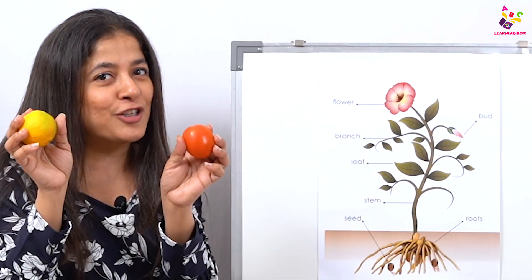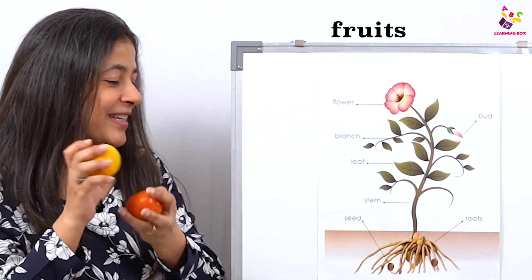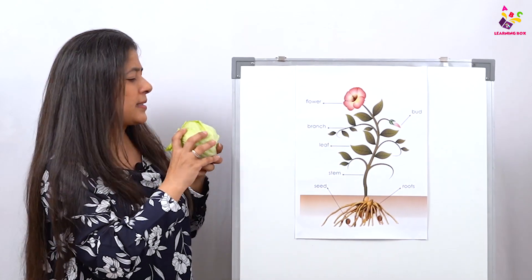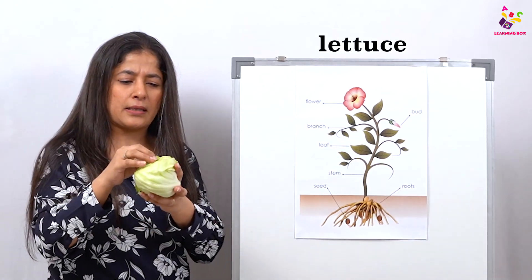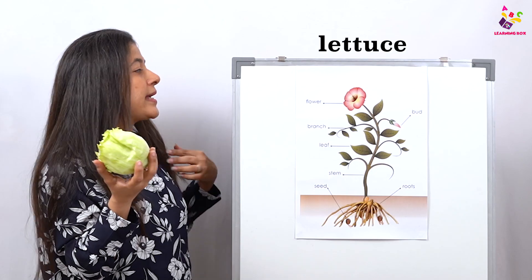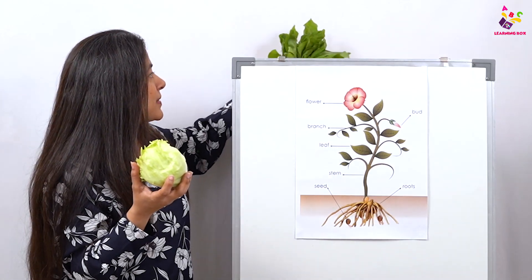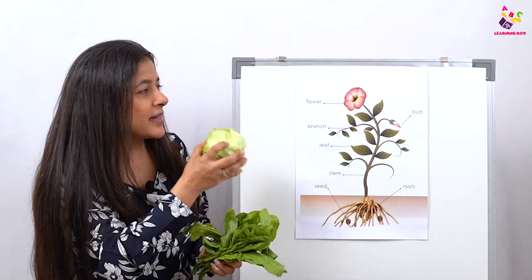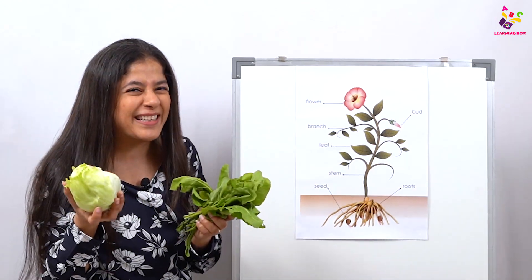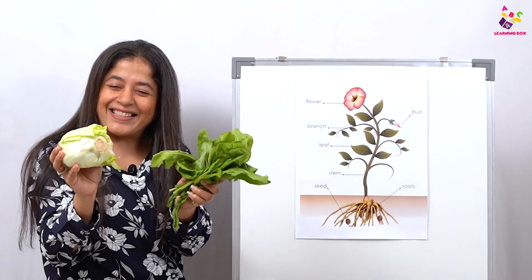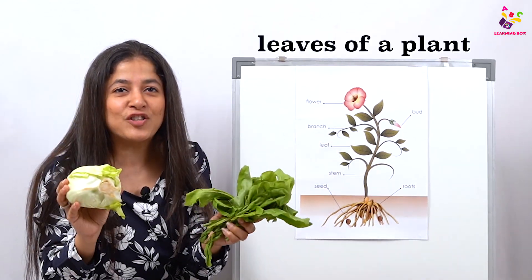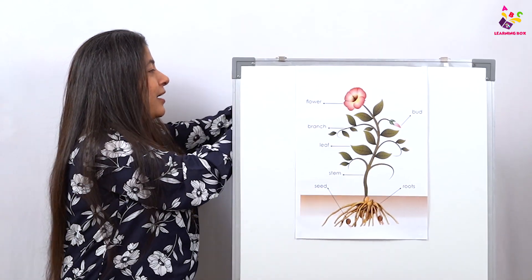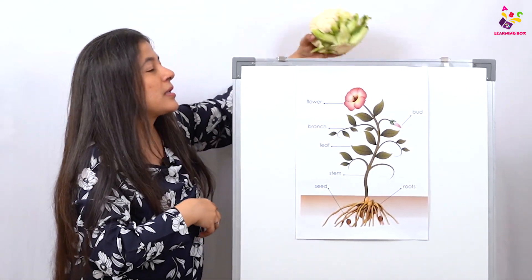And let's see — what is this? Lettuce! And I also have some spinach here. What are these? Which part of the plant? Come on, tell me — this is very easy! Excellent — these are the leaves of a plant!